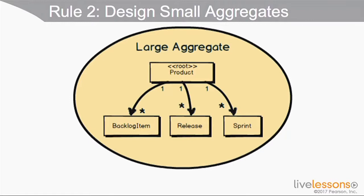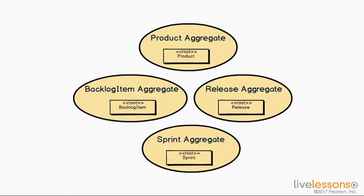Other disadvantages of large aggregates include a large memory footprint, slower loading times, and potential garbage collection problems. By breaking the product aggregate into four separate aggregate types — product, backlog item, release, and sprint — we prevent concurrency failures, reduce memory footprints, and vastly improve garbage collection. Overall, this smaller design improves our modeling situation tremendously.